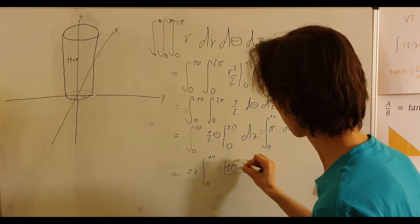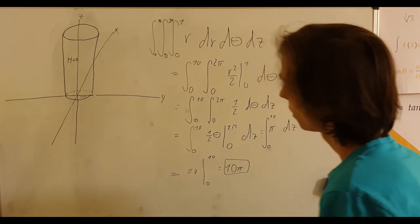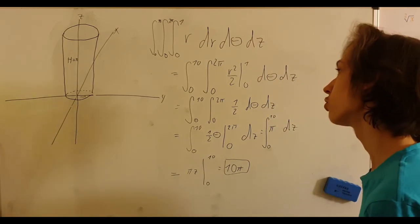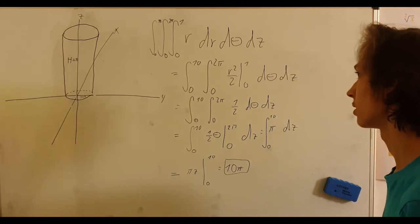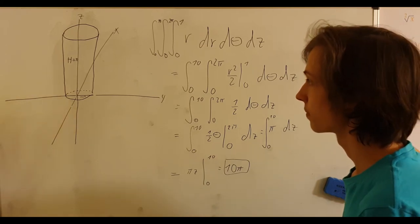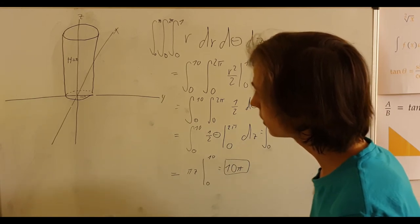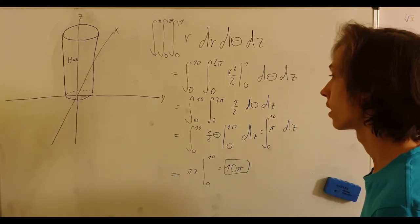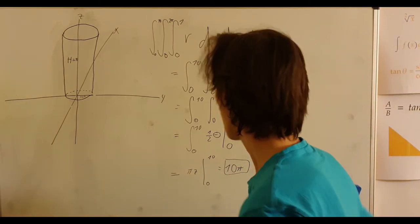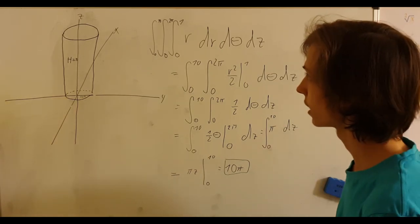We see that the volume of this cylinder is 10 pi, and it's also logical. Because if you take the volume the way that you basically use the formula for calculating the area of a circle, which is pi r squared, you will get pi times r squared, which is pi, because r is just 1 here, times 10. So you have 10 pi, and the result is correctly that way.